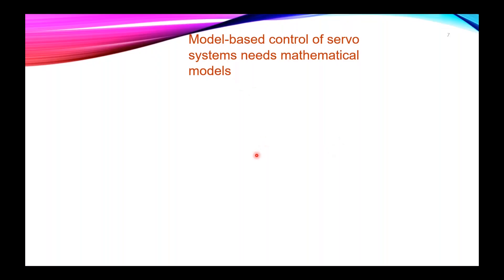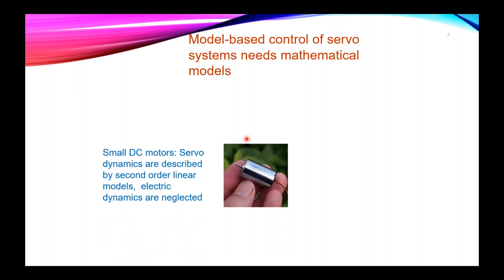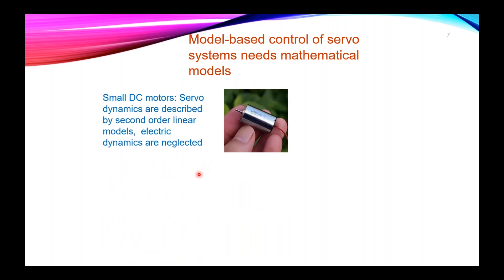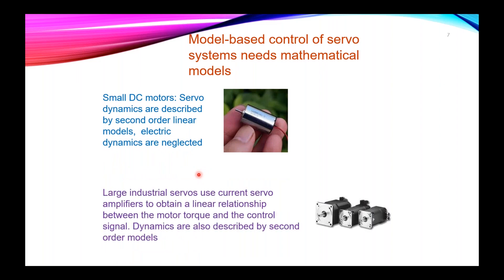In the case of servo models, if we want to apply a model-based controller to a servo, we need some kind of mathematical model describing its dynamics. For small DC servomotors, the servo dynamics are described by second-order linear models in which the electric dynamics are neglected. For large industrial servos, current servo amplifiers are used to obtain a linear relationship between motor torque and the control signal, and the dynamics are also described by second-order models.